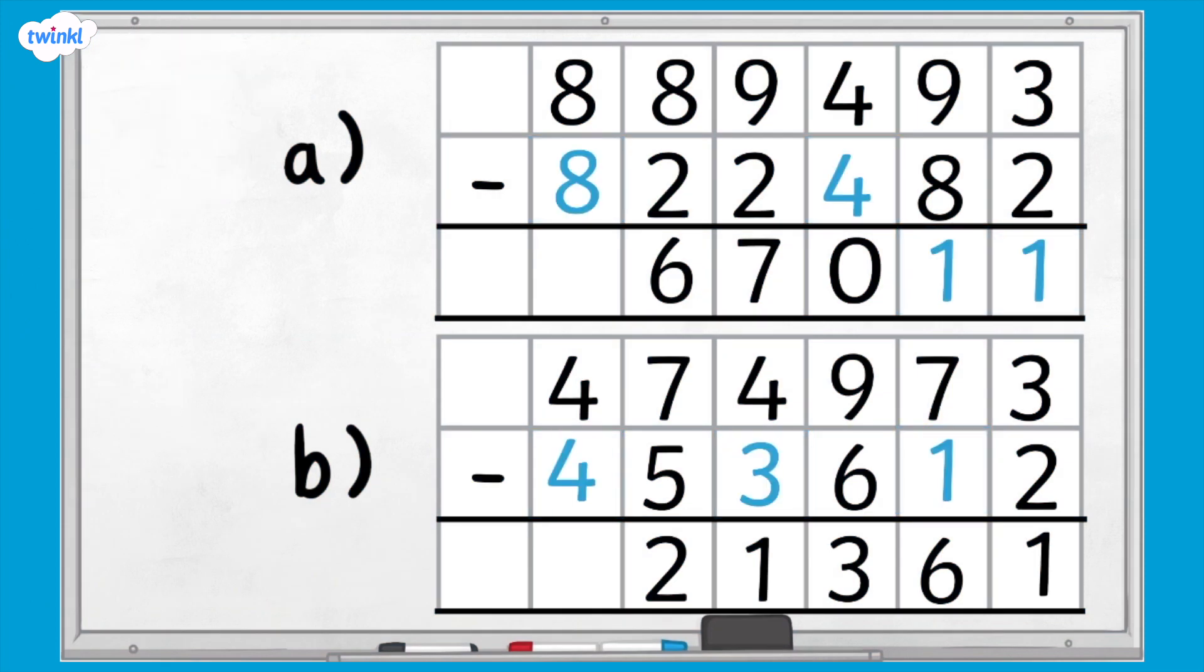Here are the answers. Well done if you correctly managed to fill in all the gaps. I hope this helped you understand how to use column subtraction for five and six digit numbers without exchanging. If you're looking for more math help, we've got lots more videos on the Twinkl website, so go and check them out.